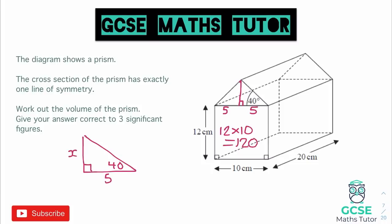To work that out, we label it up: this is the opposite and this is the adjacent. We don't have the hypotenuse, so we're going to use tan — TOA. To work out the opposite, we do tan times the adjacent: tan 40 times 5, or written the other way around as 5 tan 40. In the calculator, I type in 5 tan 40, and that gives me an answer of 4.195...